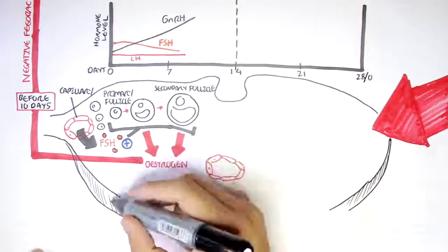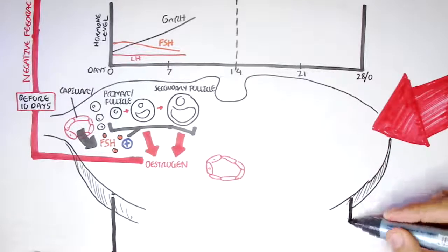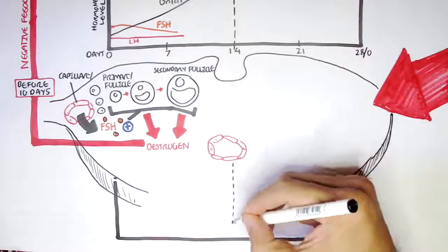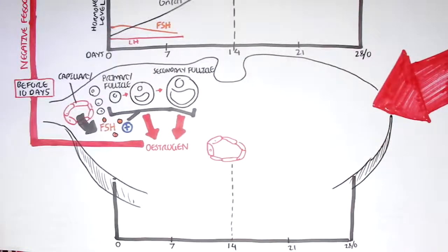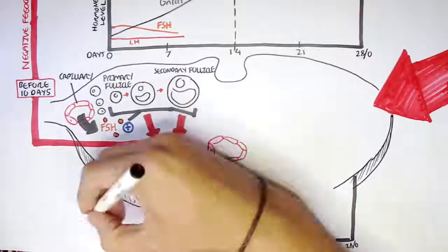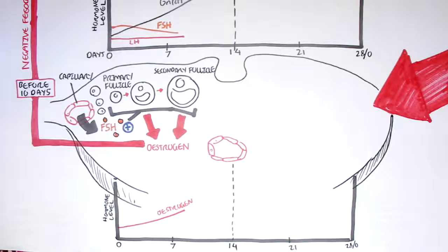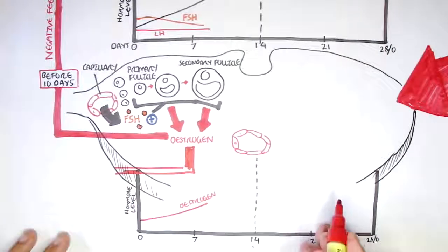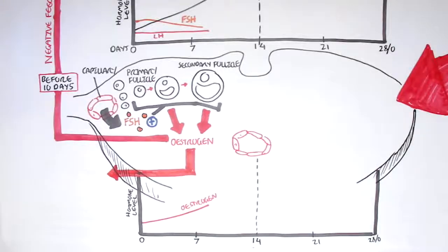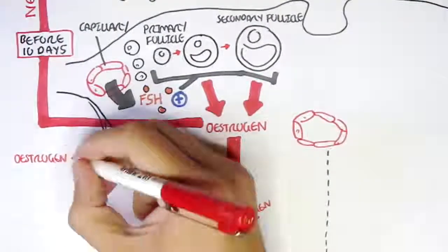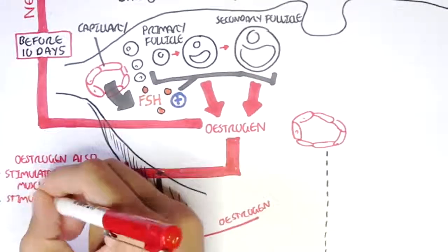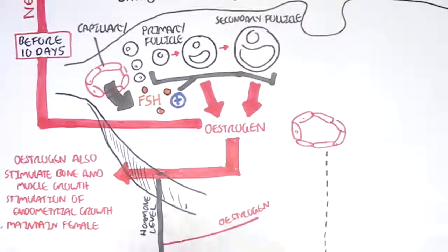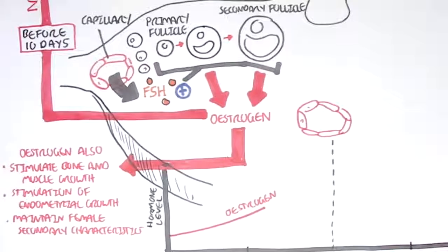Let's draw another graph showing concentrations of hormones produced by the ovaries during the 28-day menstrual cycle. As the follicle matures, it produces more estrogen, which at low concentrations inhibits LH secretion and causes a decrease in FSH secretion. Estrogen is an important hormone — essentially the female equivalent of testosterone. Its peripheral effects include stimulating bone and muscle growth, stimulating endometrial growth, maintaining female secondary characteristics, and maintaining the breasts and glands, among many other things.